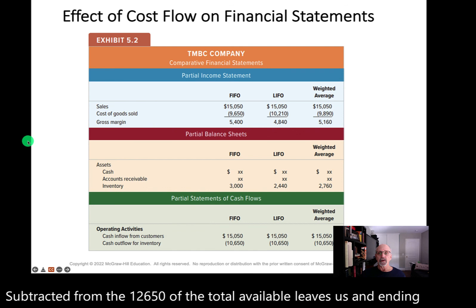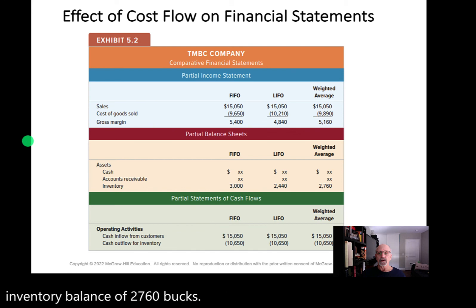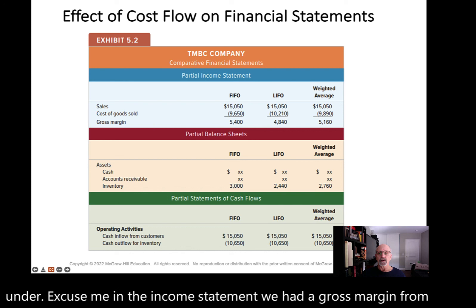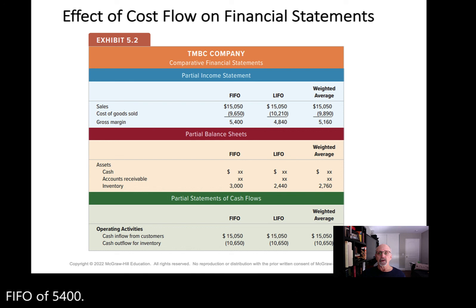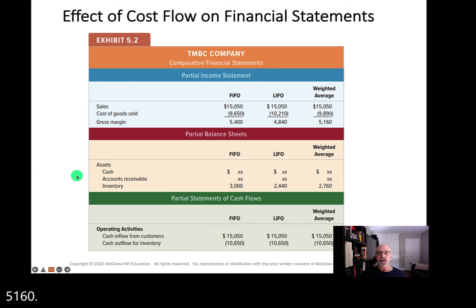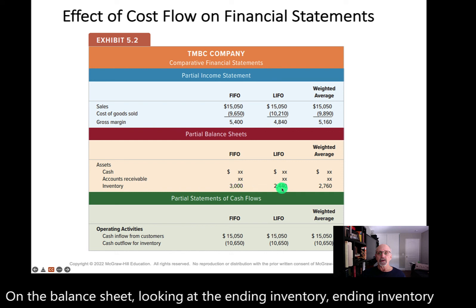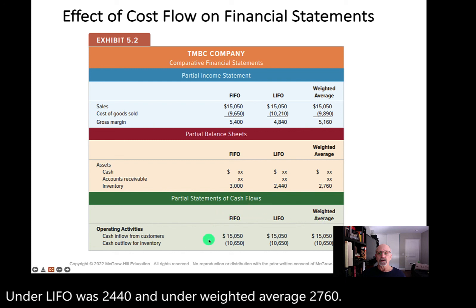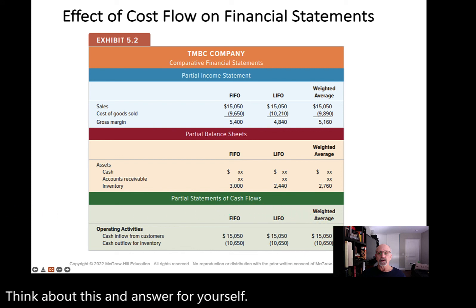Here are the financial statements based on the three cost flow methods. On the income statement, gross margin from FIFO was $5,400, from LIFO was $4,840, and weighted average again in between at $5,160. On the balance sheet, ending inventory under FIFO was $3,000, under LIFO was $2,440, and under weighted average $2,760. Now think about this and answer for yourself — why is it that under the statement of cash flow, no matter what method we use for the flow of cost, the inflows and outflows...